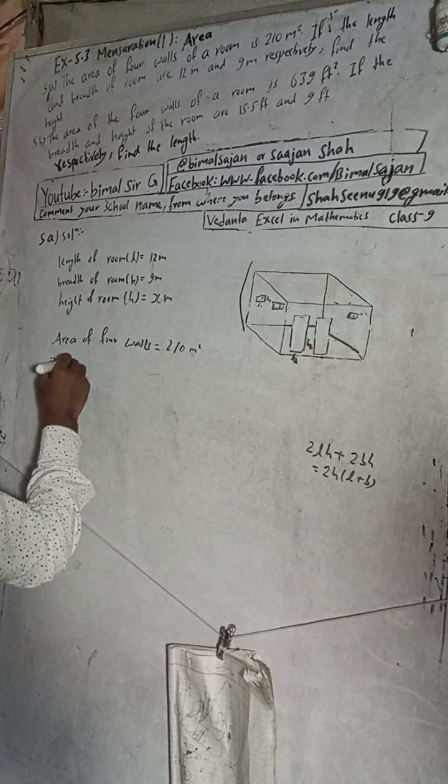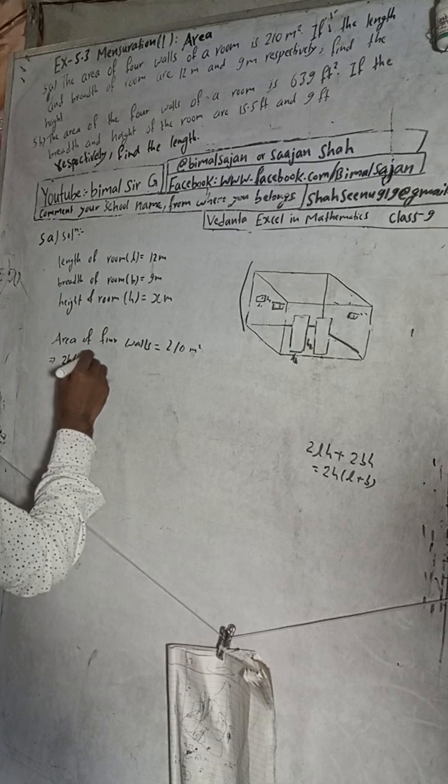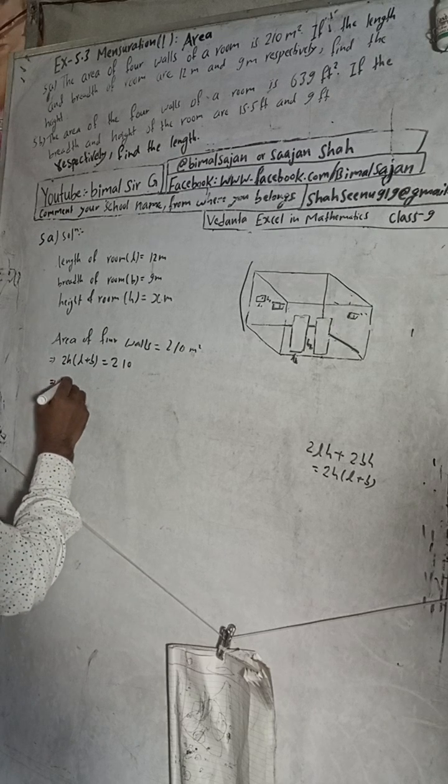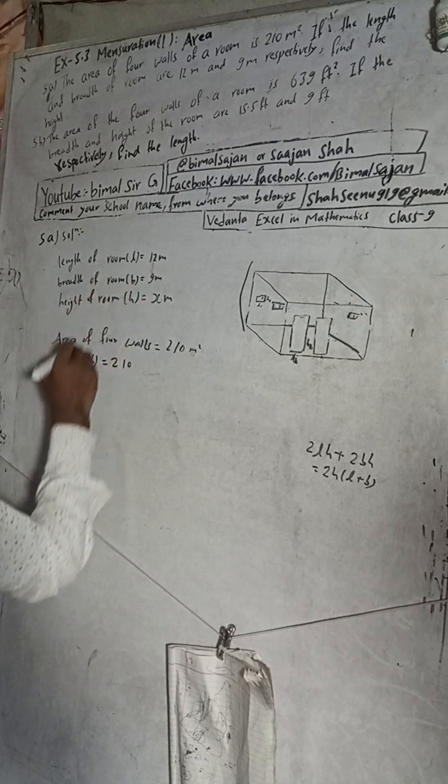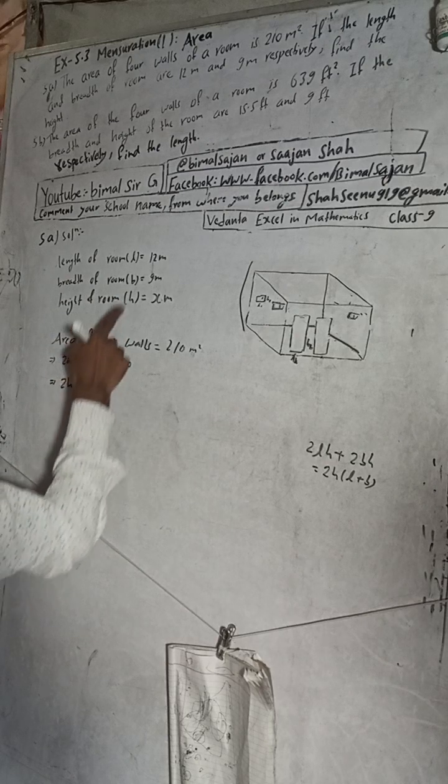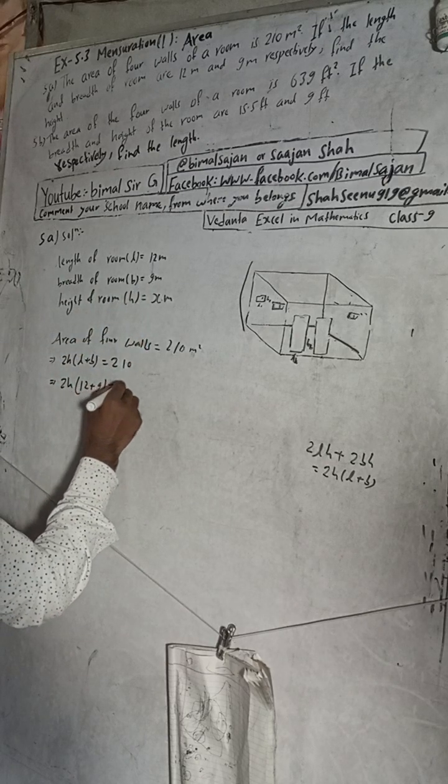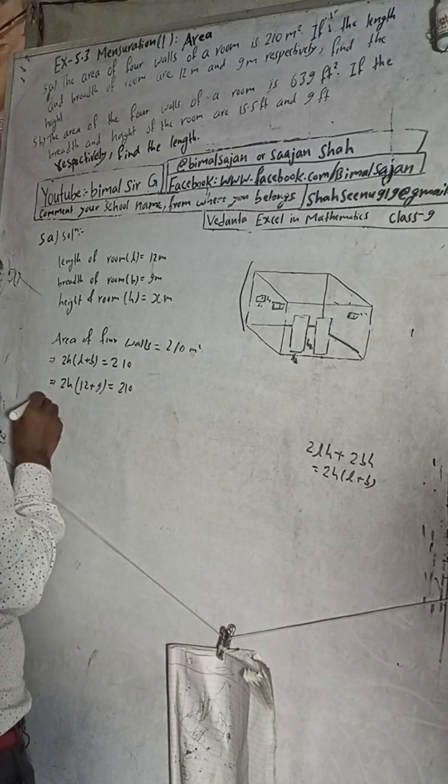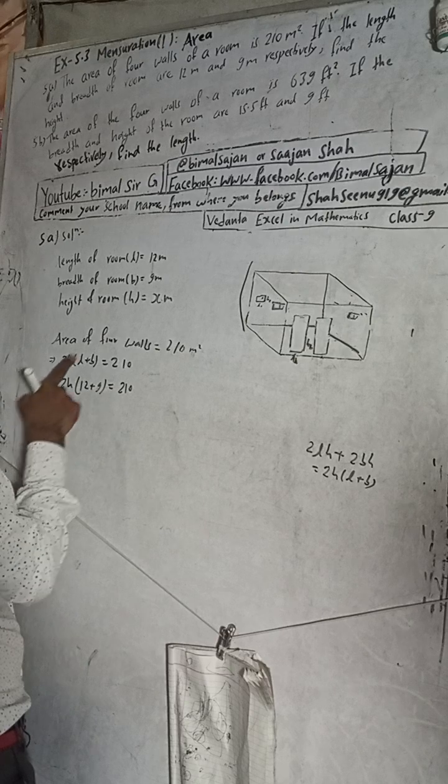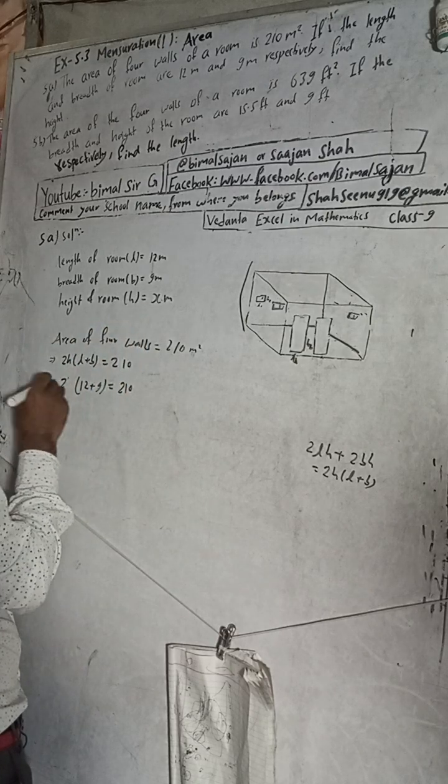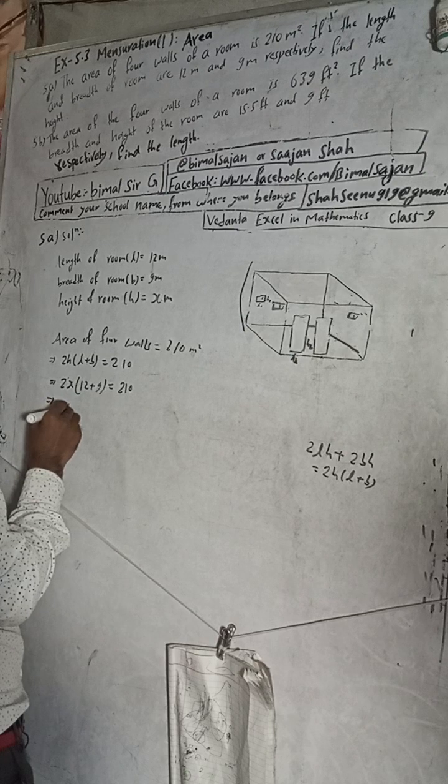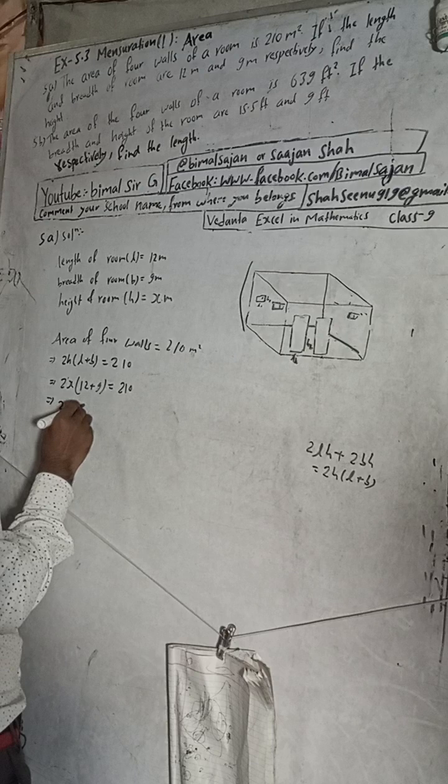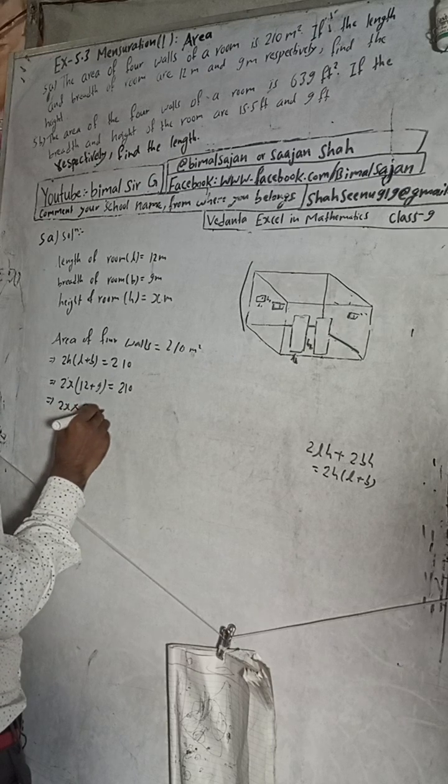So 2H into L plus B is equal to 210. This is 2H into 12 plus 9. How much? 21. So 2H into 21 is equal to 210.